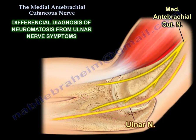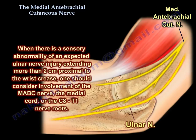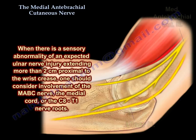Differential diagnosis: neuromatosis versus ulnar nerve symptoms. Both the Medial Antibrachial Cutaneous Nerve and the ulnar nerve are in the same location and give the same symptoms, and can be hard to distinguish between them. Differential blocks may be used to differentiate between both, in addition to an elaborate clinical exam. When there is a sensory abnormality of an expected ulnar nerve injury extending more than 2 cm proximal to the wrist crease, one should consider involvement of the Medial Antibrachial Cutaneous Nerve, the medial cord, or C8-T1 nerve roots.